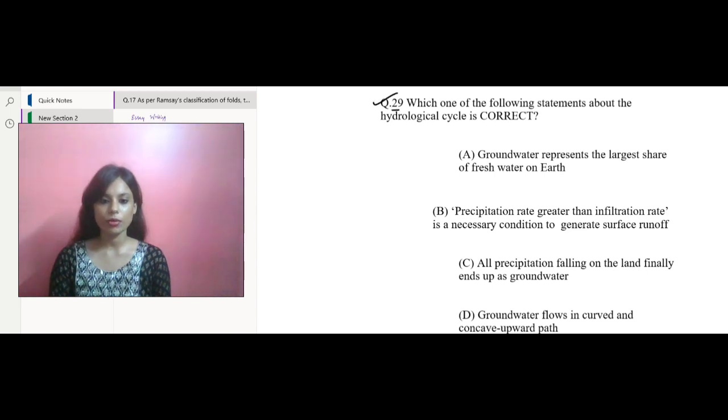Question number 29. Which one of the following statements about the hydrological cycle is correct? Let's see the options. Option A says groundwater represents the largest share of fresh water on earth. Next we have precipitation rate is greater than infiltration rate and this is a necessary condition to generate surface runoff. Okay, so till now this one is correct but we have to see all the other options also.